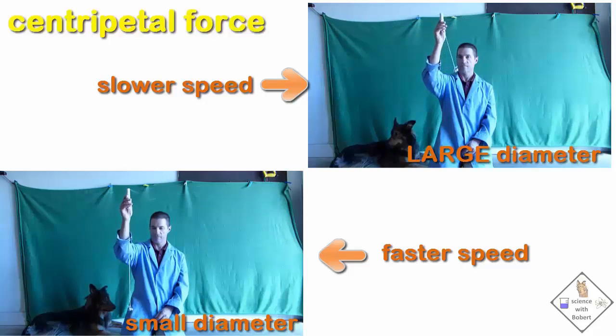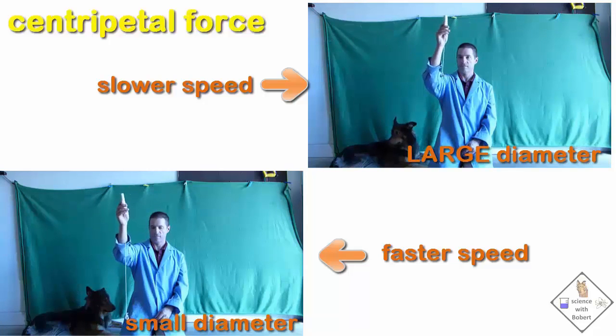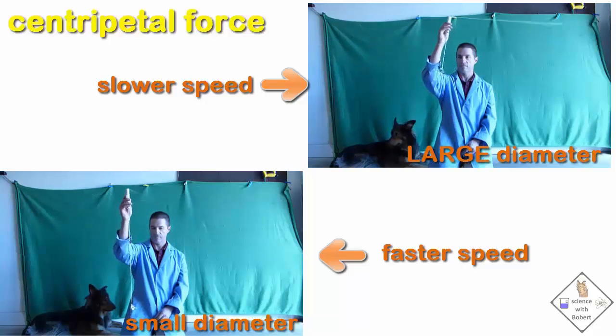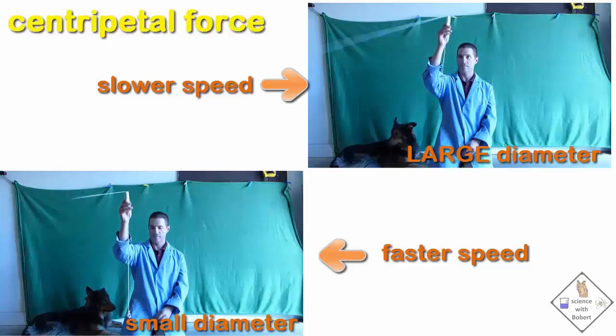Regardless of the size of the circle, the centripetal force always equals the weight of the 10 washers. The speed of the swung washer just needs to be made larger for smaller circles.